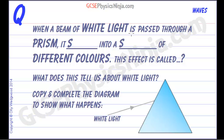When a beam of white light is passed through a prism, it splits into what's called a spectrum of different colours.